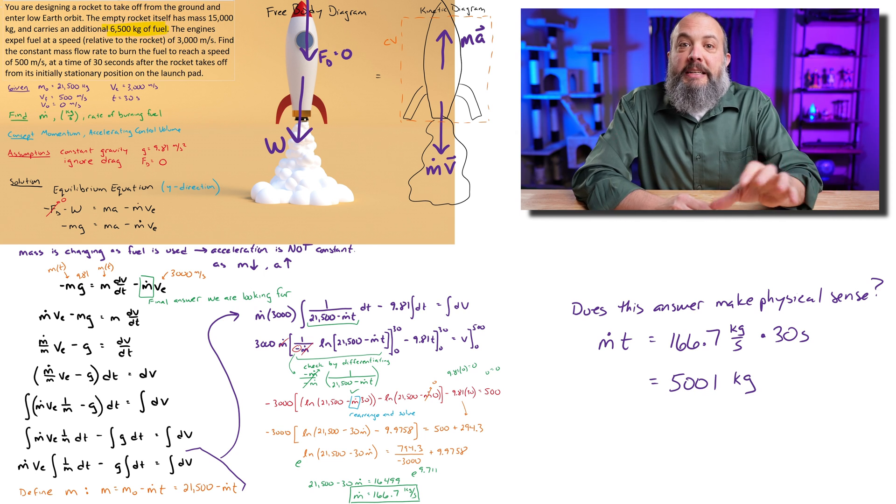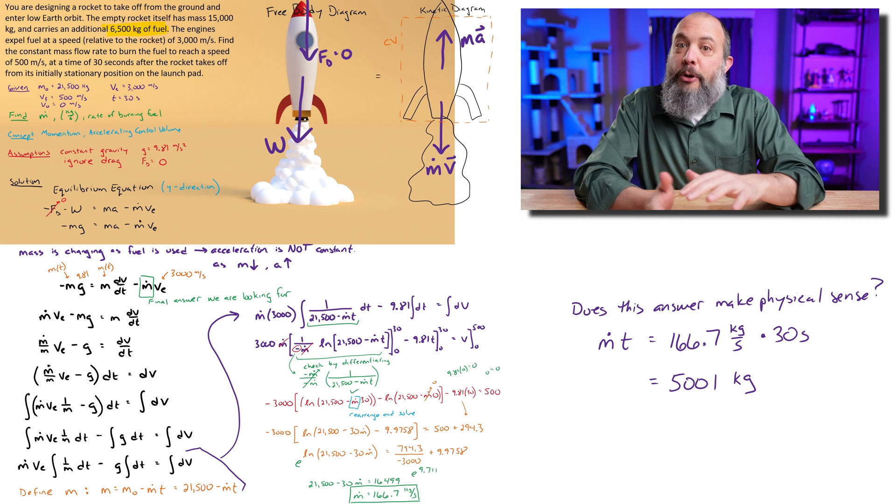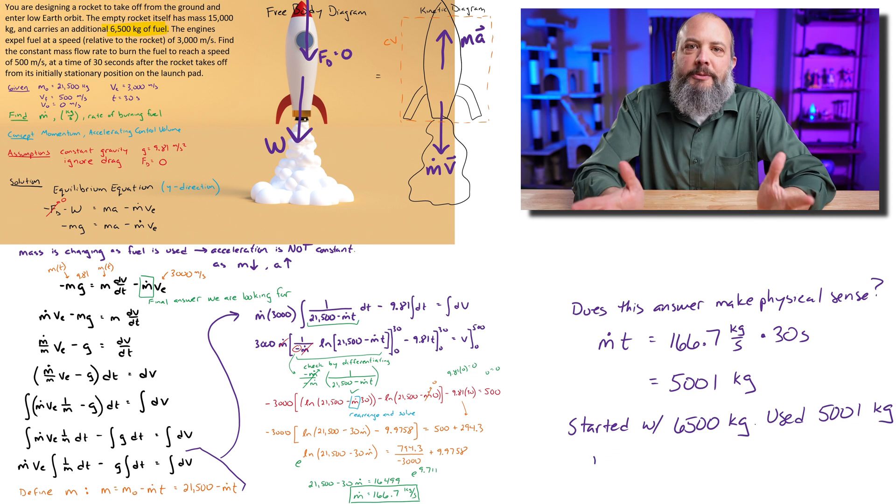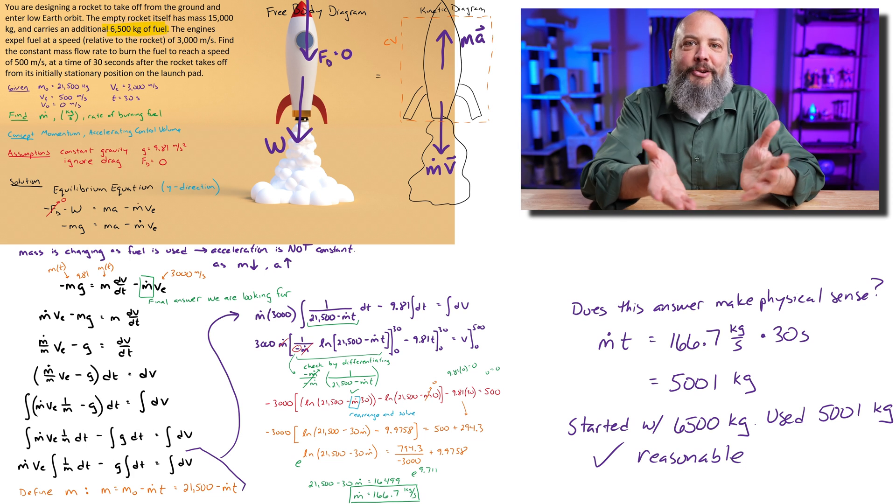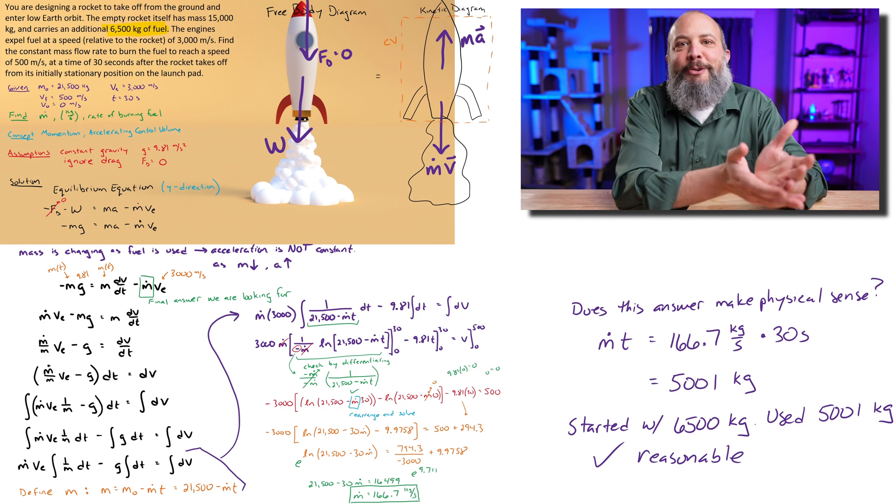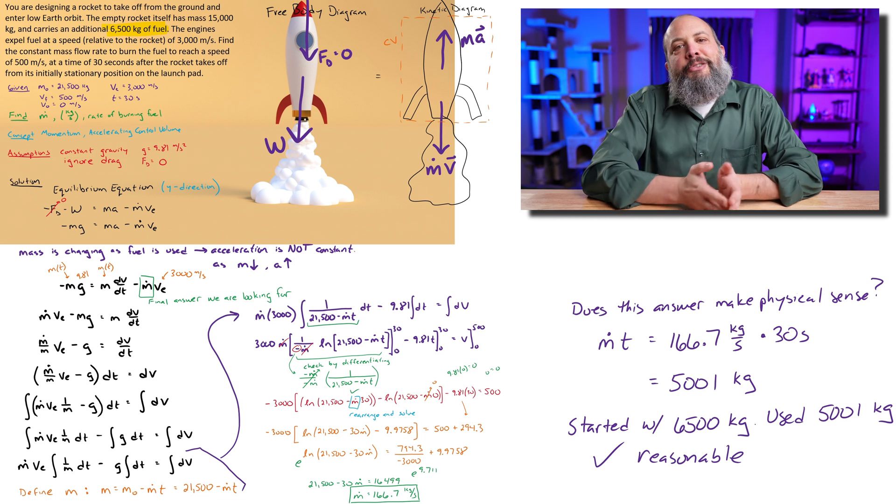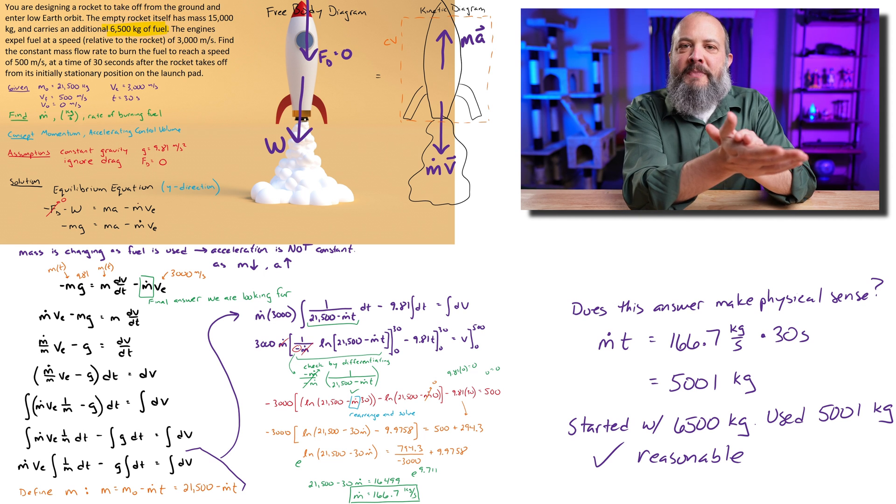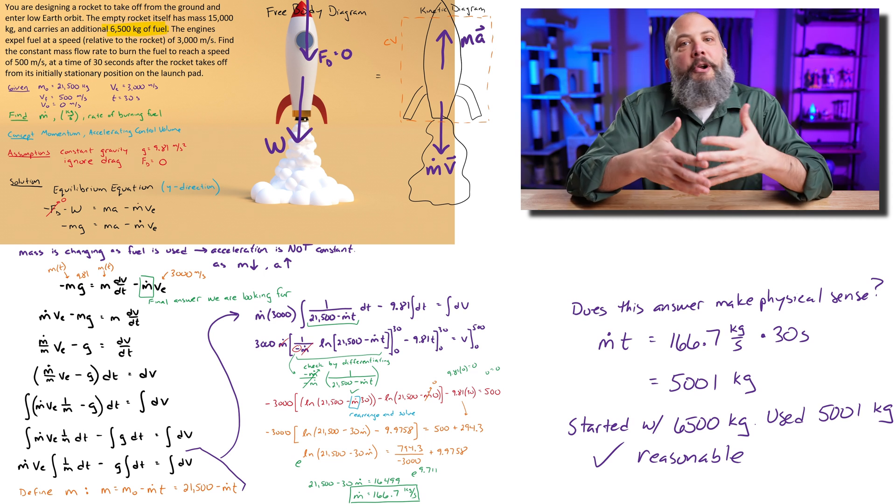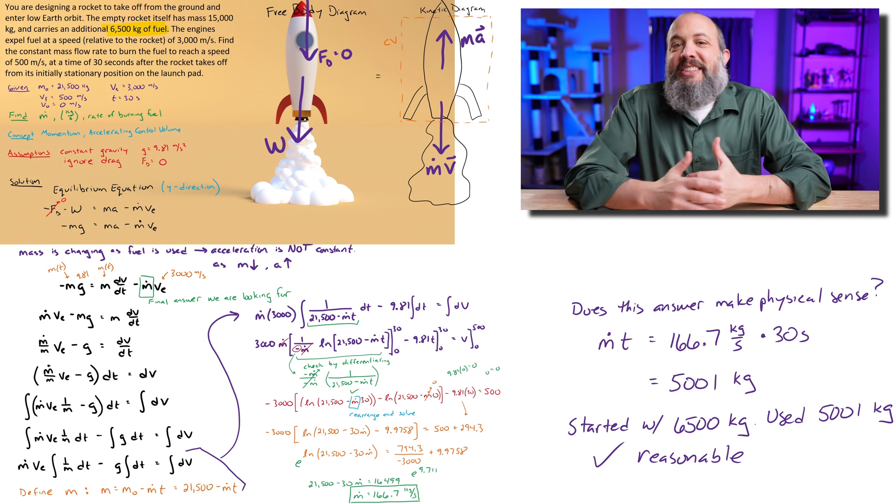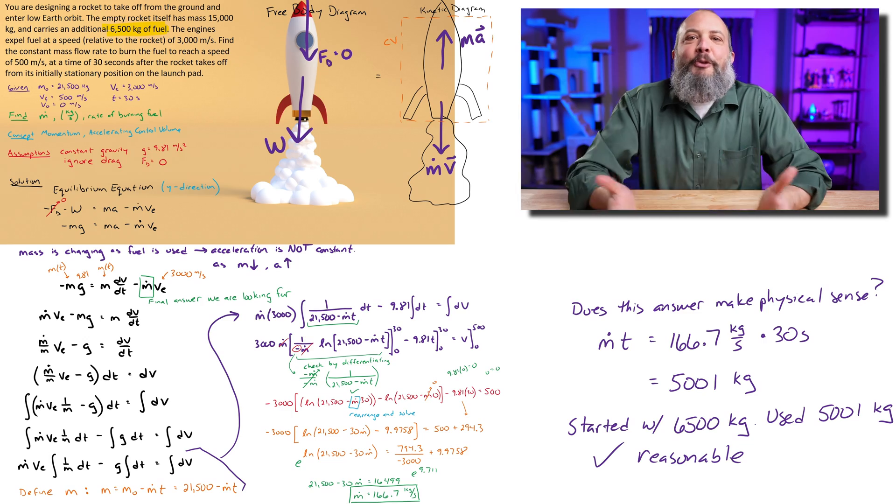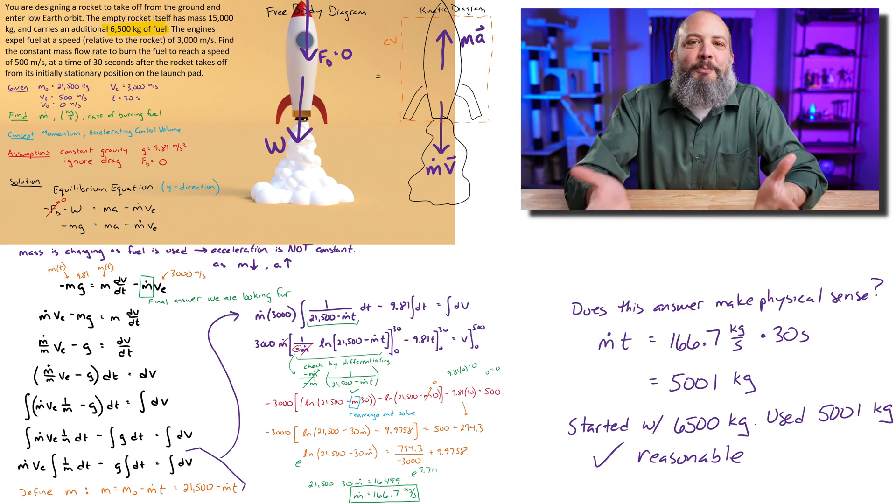So since we started with 6,500 kilograms, if we had got an answer more than 6,500, we would know that that's impossible because we only had 6,500. We can't burn 7,000 kilograms if we only started with 6,500. So since 5,000 is less than the amount that we started with, but it's on the same order of magnitude, this doesn't guarantee that our answer is correct, but it at least is definitely within the realm of viable. It's a reasonable amount.